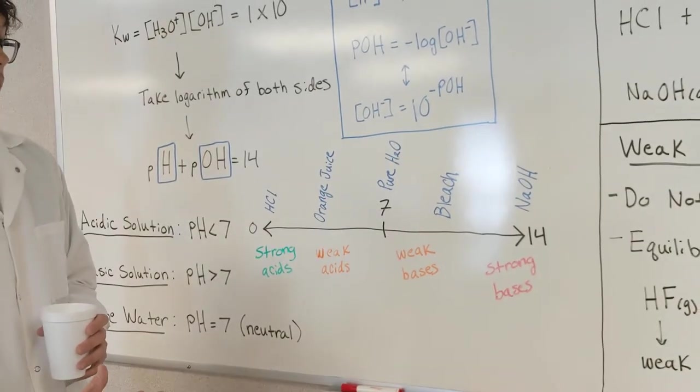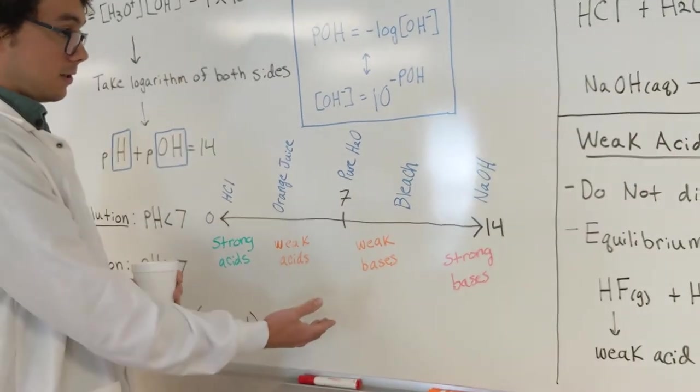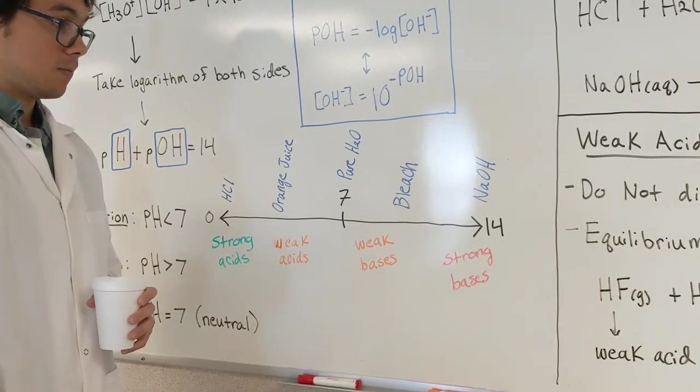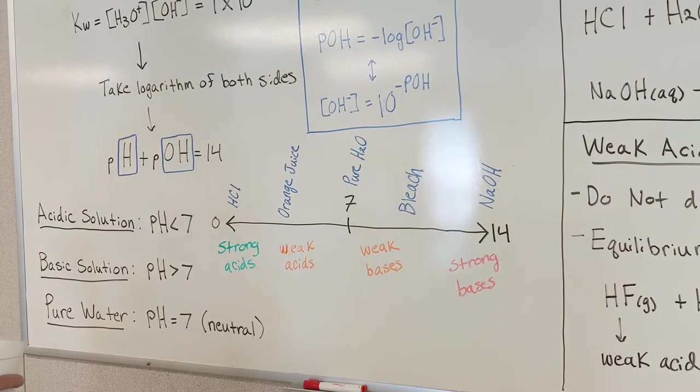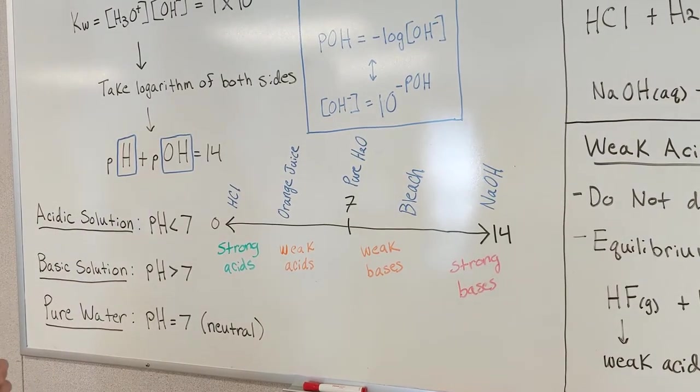And you start getting into the more basics. Now we're above 7. So, we have weak bases. Bleach would be an example, around 10. And then, of course, strong bases are at the end of this scale. And that would be sodium hydroxide, potassium hydroxide.